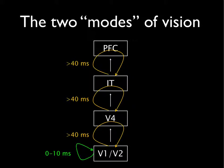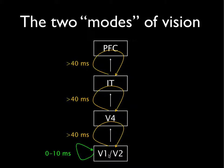Another slide from Thomas Serre shows a simplified model: after information arrives in V1 in about 10 milliseconds, information propagated to V4 might take about 40 milliseconds. Each one of these areas might send feedback, and the whole neural network will stabilize if there is enough time. Within about 200 milliseconds, you get a response — you know what you're looking at.